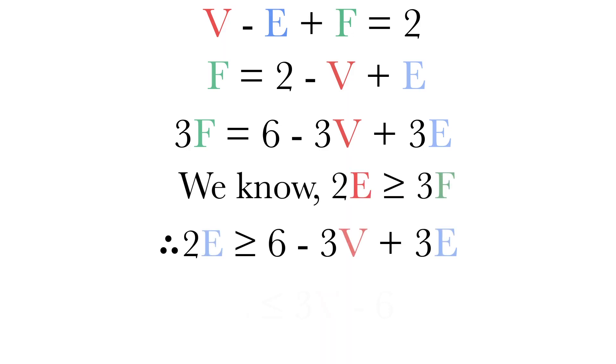Now let's rearrange Euler's formula, taking E and V on the other side, and multiplying each side by 3. We can use the inequality earlier, which now gives us E is less than or equal to 3V minus 6.